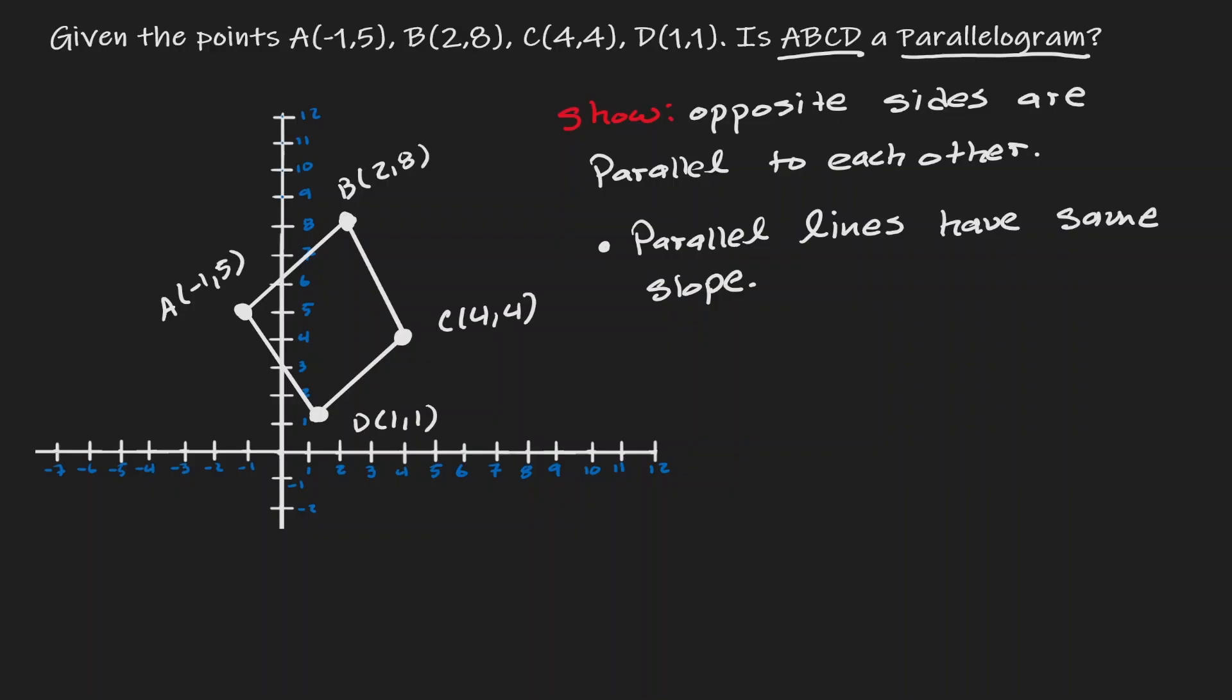So now we have a strategy. We can choose two opposite sides, take a look at their slope, and if they're equal, then we know that they're parallel.